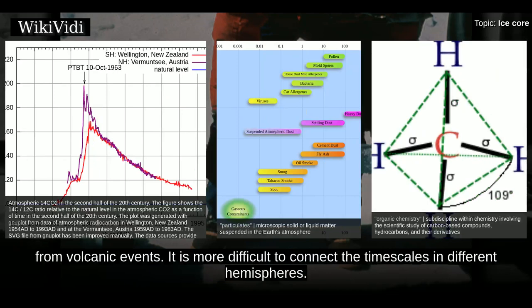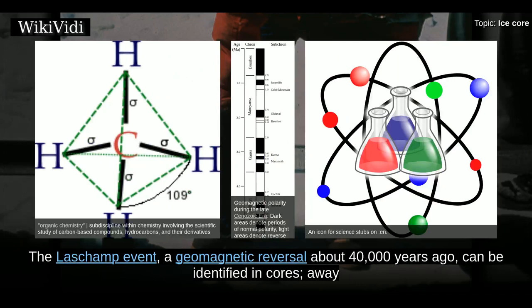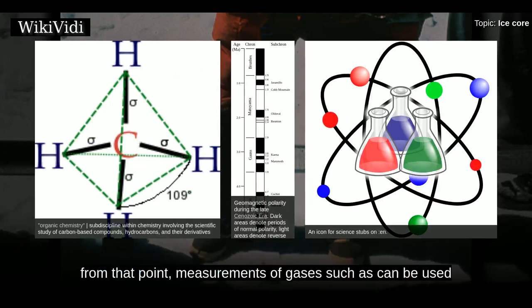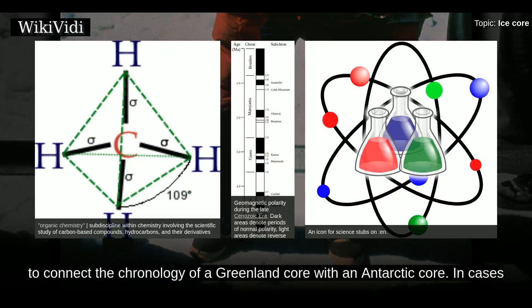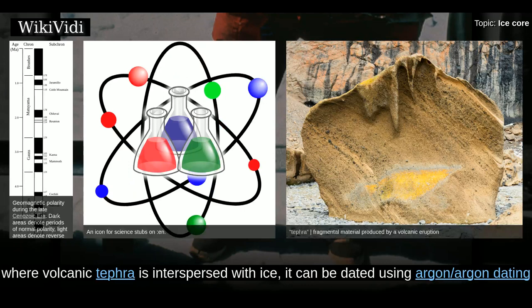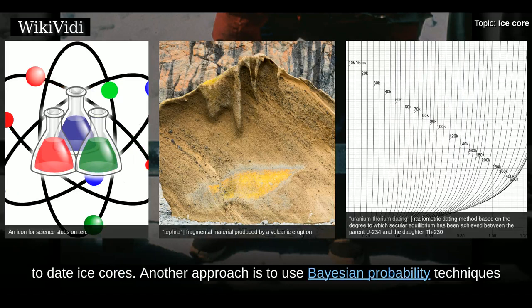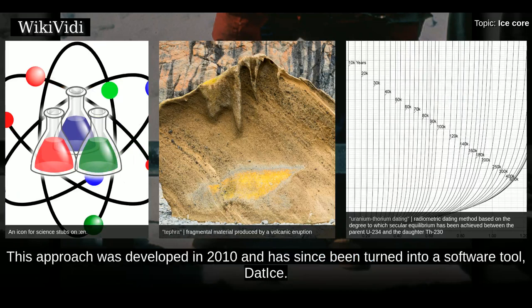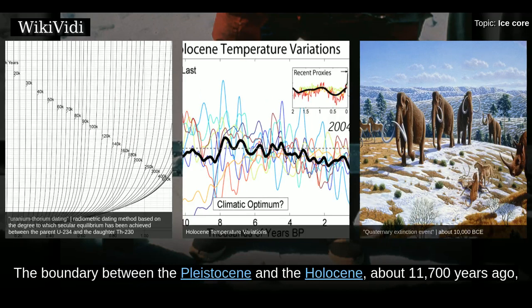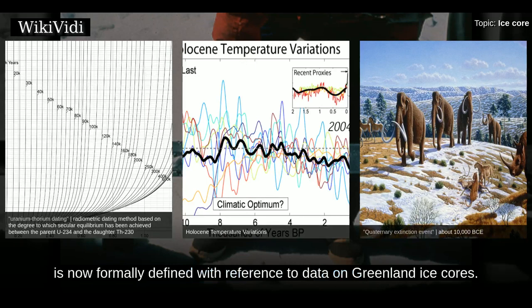It is more difficult to connect time scales in different hemispheres. The Laschamp geomagnetic reversal about 40,000 years ago can be identified in cores, and measurements of gases can be used to connect the chronology of a Greenland core with an Antarctic core. In cases where volcanic tephra is interspersed with ice, it can be dated using argon-argon dating, providing fixed points for dating the ice. Uranium decay has also been used to date ice cores. The boundary between the Pleistocene and the Holocene about 11,700 years ago is now formally defined with reference to data on Greenland ice cores.